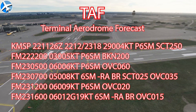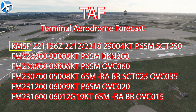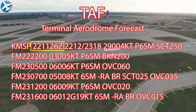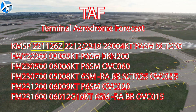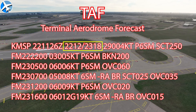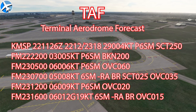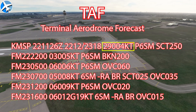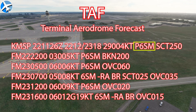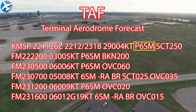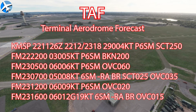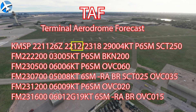Like the METAR previously, the first thing we see is KMSP, or the location. The next thing is when the forecast was actually made — the 22nd at 1126 Zulu. Then we have the time it's effective for: it starts on the 22nd at 12 Zulu and goes until 18 Zulu on the 23rd. The winds are 290 degrees true north at 4 knots, visibility better than 6 statute miles, and ceiling 25,000 scattered — that's the weather forecasted from 12Z until 22Z.